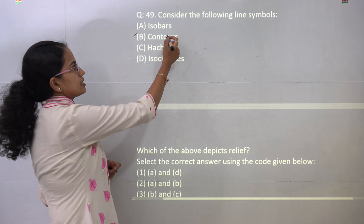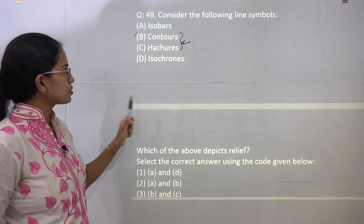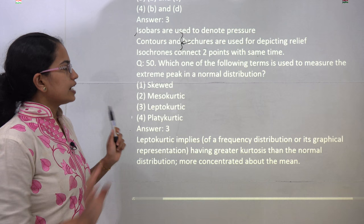The next question asks which of the following are line symbols. Isobars represent pressure, isochrones represent time, and contours and hedges are used to represent relief features. So the correct answer is contours and hedges, that is B and C.